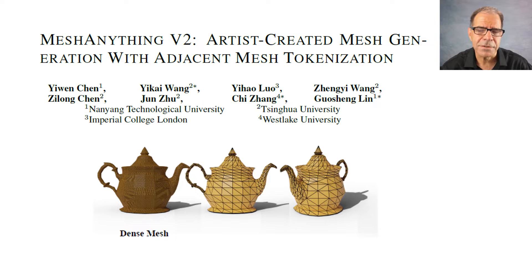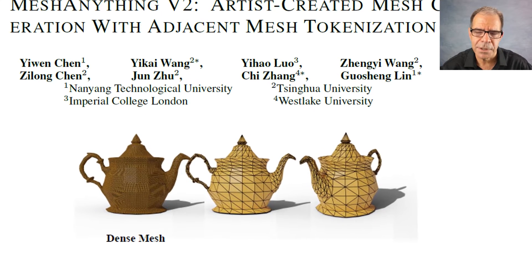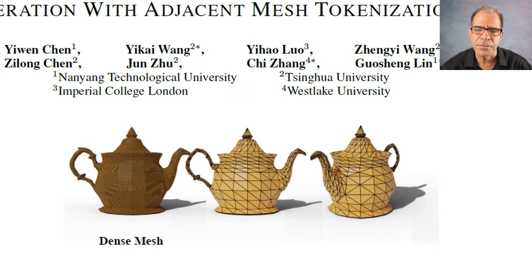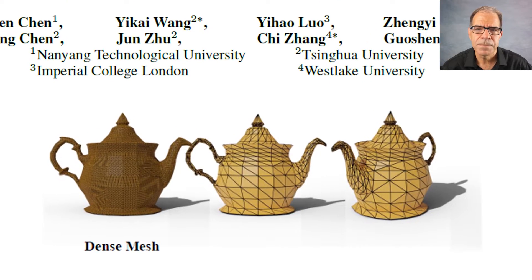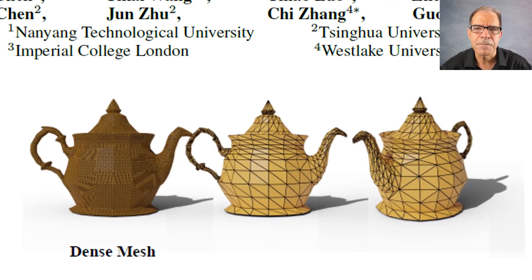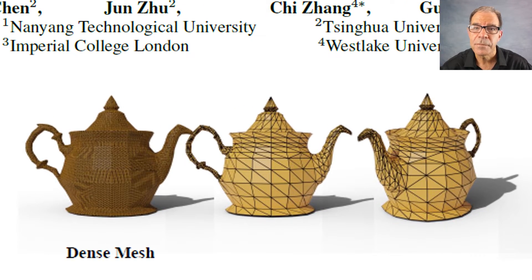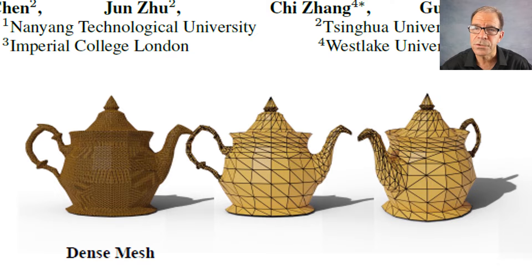In this context, the word mesh refers to a representation of the surface of a 3D object, like the way skin covers the body. A mesh can capture fine details like bumps and contours, and it can stretch, wrinkle, and move.